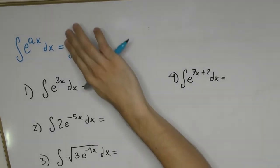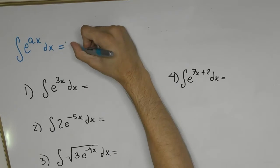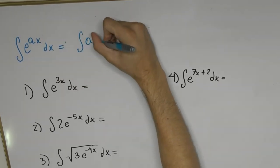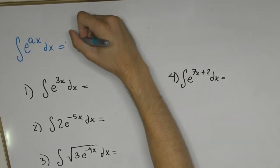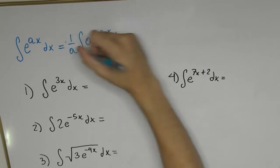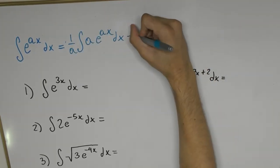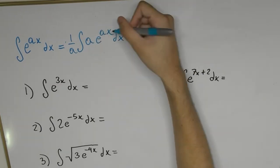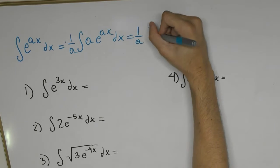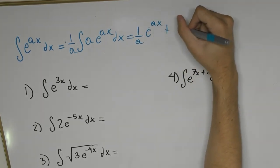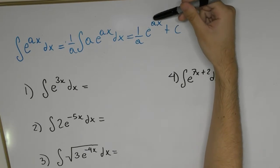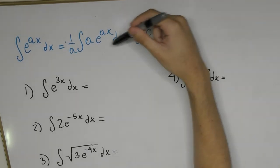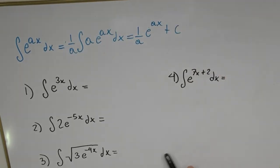We write the integral as a·e^(ax) dx, and since we've included this extra factor of a, we place 1/a at the front of the integral. We already know what the integral of this should be — what differentiates into this function is e^(ax) plus some constant c. That's our general formula. If you differentiate this, the a comes to the front and cancels with the 1/a, giving us e^(ax).